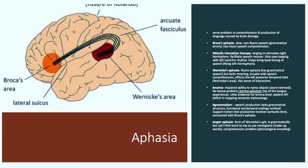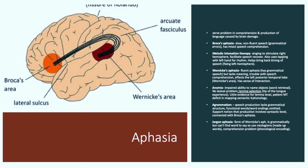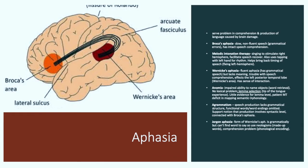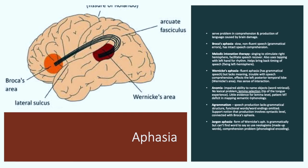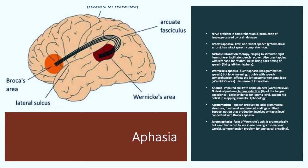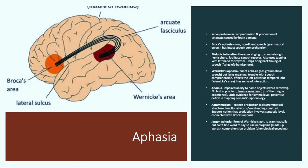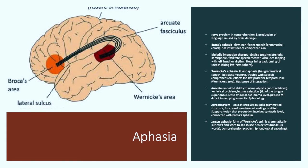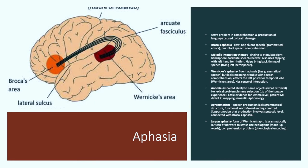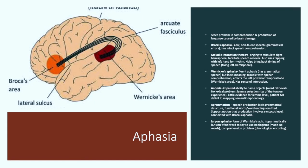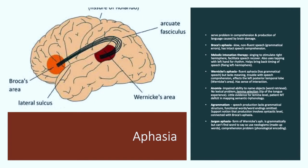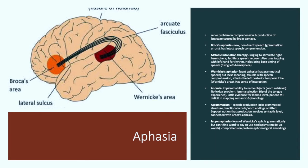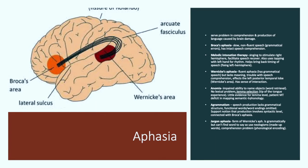Agrammatism. This is defined as speech production that lacks grammatical structure. Functional words or word endings become omitted. This supports the notion that production involves syntactic level, which is connected with Broca's aphasia. There is also jargon aphasia, which is a form of Wernicke's aphasia. It is grammatically correct, but individuals who have this form of aphasia cannot find words to say, so they use neologisms or made-up words. And thus, this highlights that they have a comprehension problem in regards to their phonological encoding.